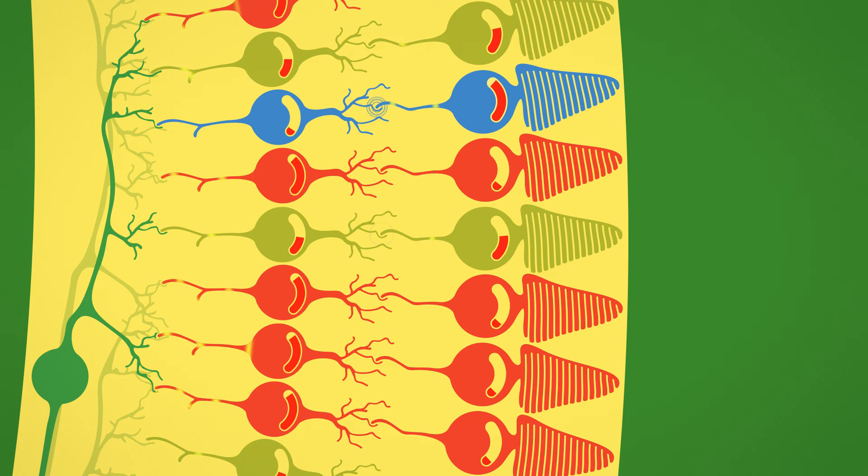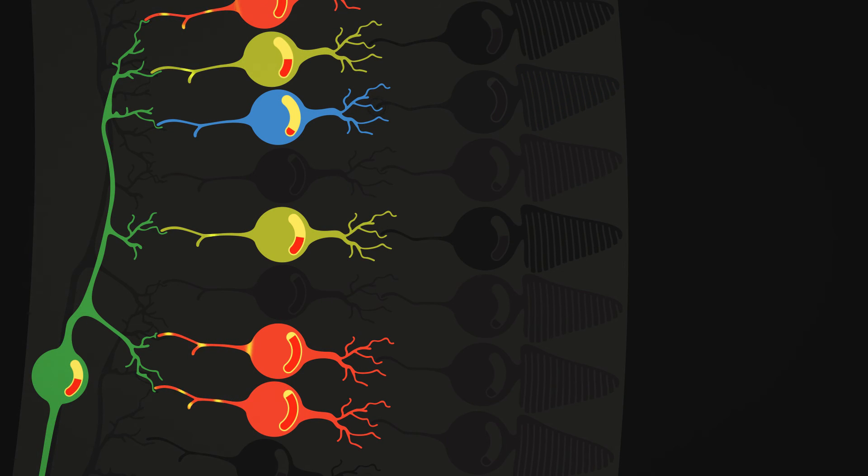How this happens is a bit complex. Each ganglion cell receives signals from several bipolar cells. Some of these excite the ganglion cell and some inhibit it. These simple inputs are carried to the brain, not individually, but as the ratio of inhibitory to excitatory inputs.